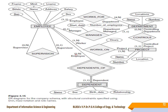For DEPENDENTS_OF: the employee side is (0,N) — an employee may or may not have dependents, and can have multiple dependents. 0 indicates partial participation. The dependent side is (1,1): since Dependent is a weak entity type identified through this identifying relationship, a dependent must be related to exactly one employee — minimum 1 and maximum 1, indicating total participation on the dependent side and partial on the employee side.